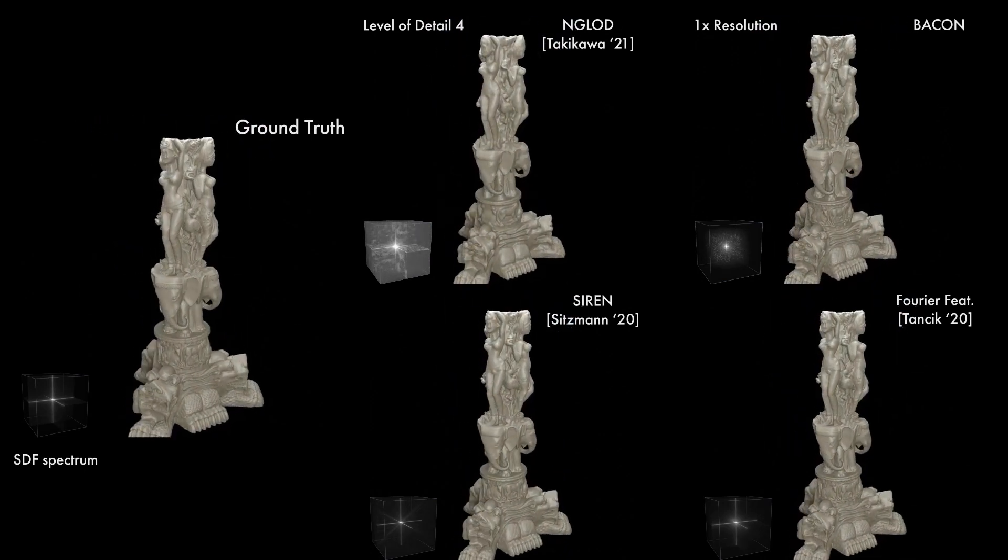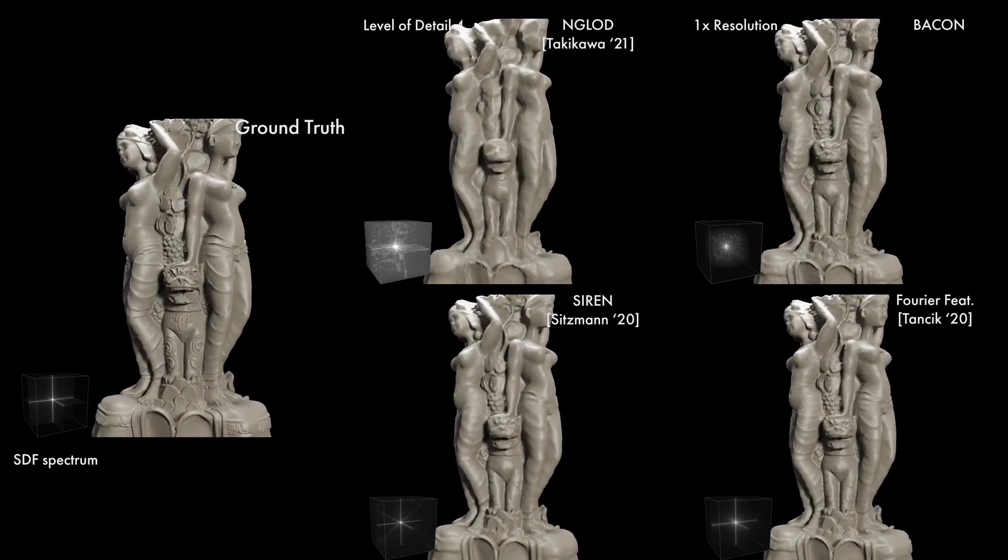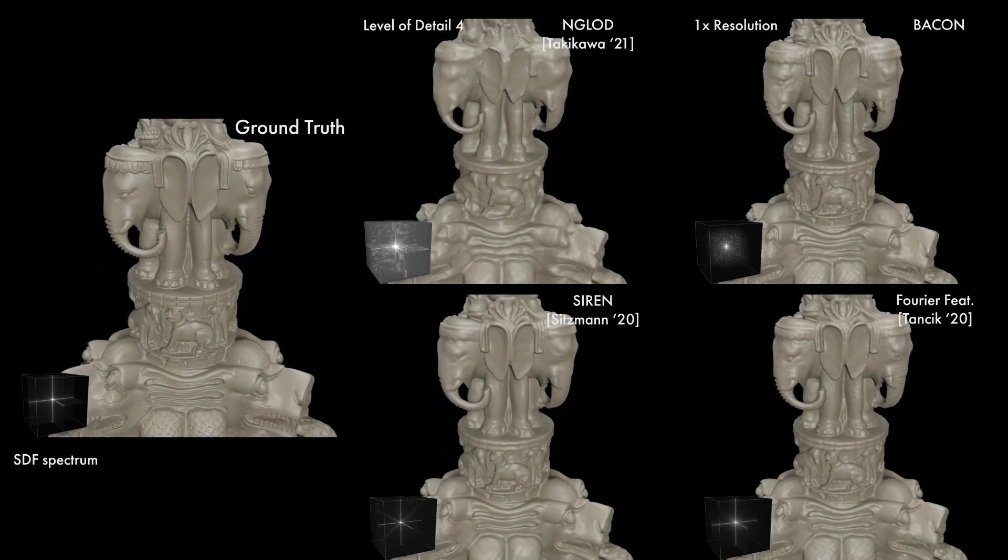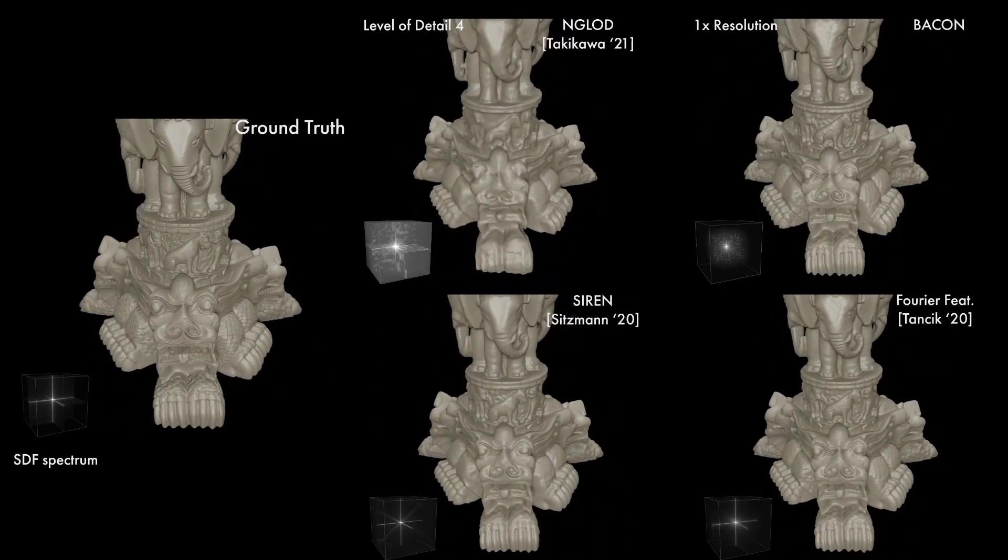We also observe that BACON produces an interpretable output at multiple levels of detail. Compared to Neural Geometric Level of Detail, low resolution outputs of BACON are much smoother because their Fourier spectra are constrained.